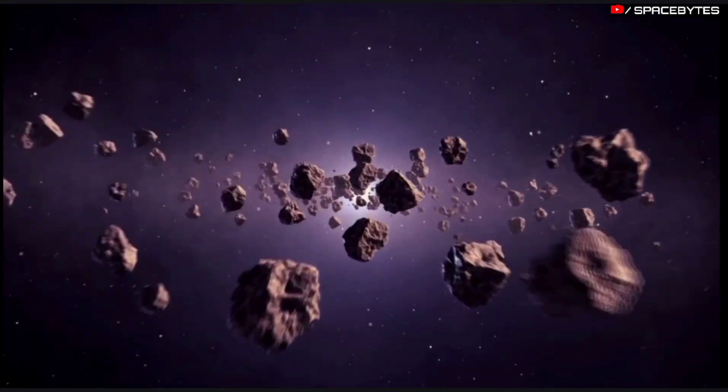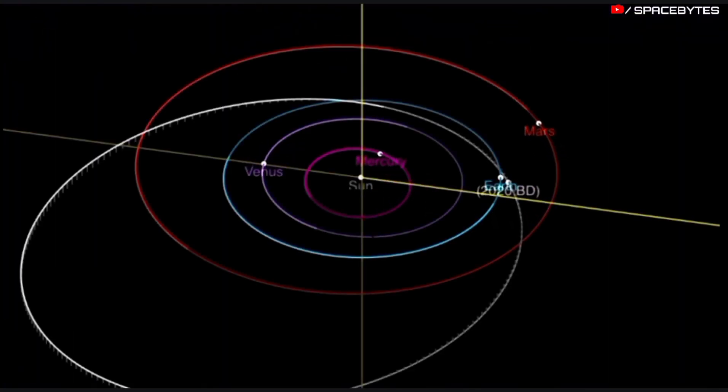This near-Earth object belongs to the Apollo group. It makes one orbit around the Sun in 1072 days.